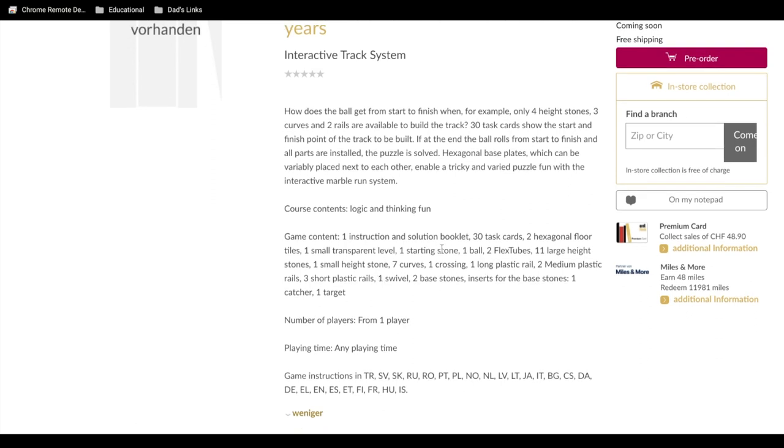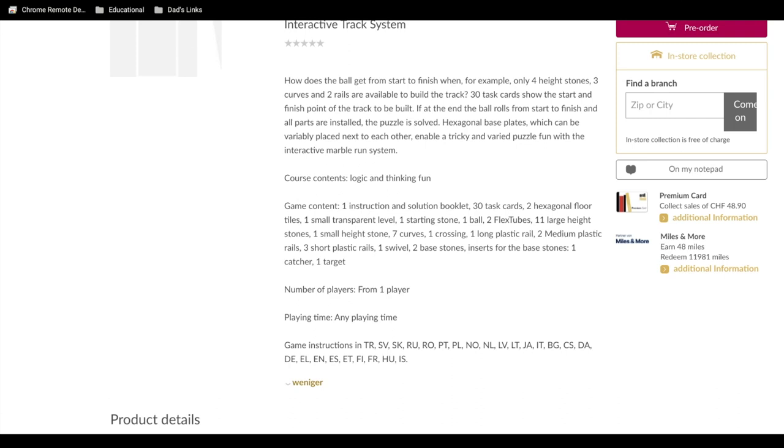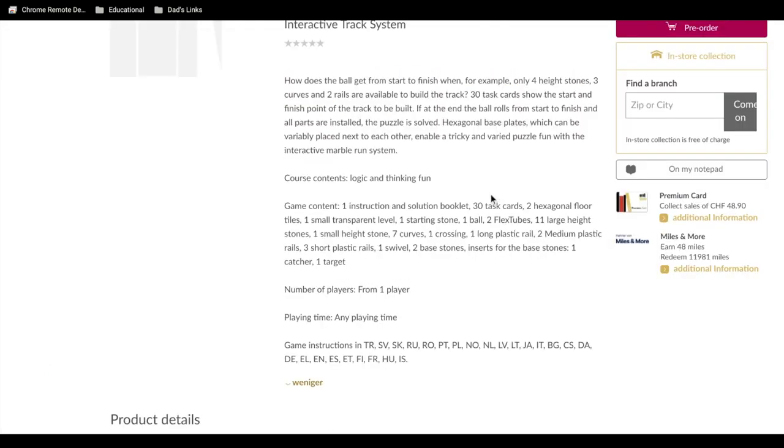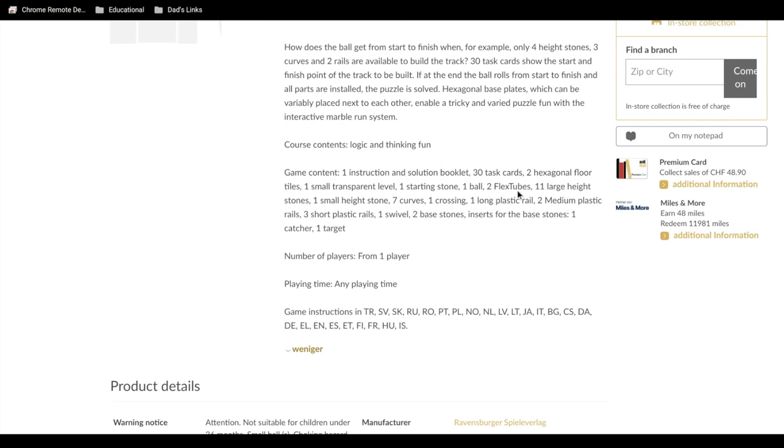So it's like a puzzle solving logic kind of way to use GraviTrax with 30 task cards that give you challenges. It has hexagonal base plates, which can be placed next to each other. That sounds like the ones from the light set. We'll see. And enable a tricky and varied puzzle fun. Okay. So here's actually the contents, an instruction and solution booklet, 30 task cards, two hexagonal floor tiles. So that's not the square ones. I think that's the small ones, or is it the square base tiles with the hexagonal insert, you know, the hexagonal pattern on it. I don't know what that means, but I'm guessing it's the small hexagonal or maybe large ones. Maybe they'll come out with new ones. Who knows? So two floor tiles, one small transparent level, one starting stone, a ball, two flex tubes.